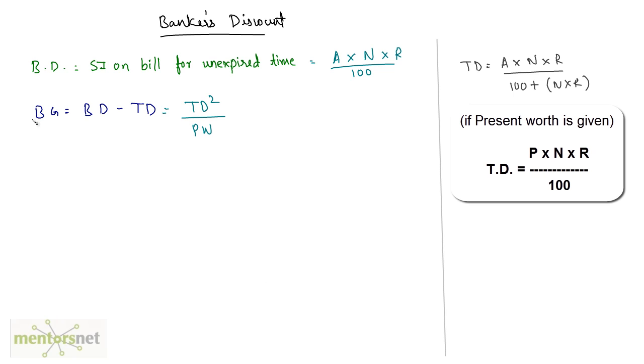From this formula we can calculate the true discount, which is equal to the square root of the banker's gain times the present worth of the amount. This is just a rearrangement of the above formula.